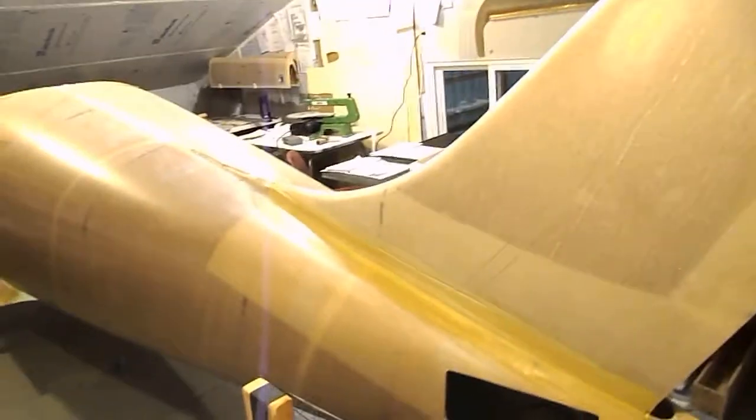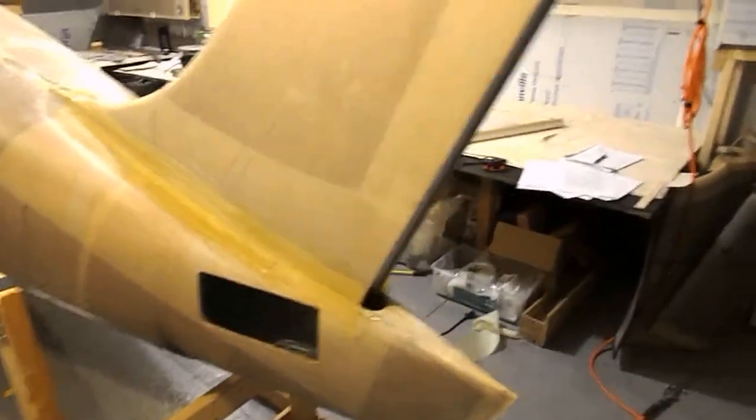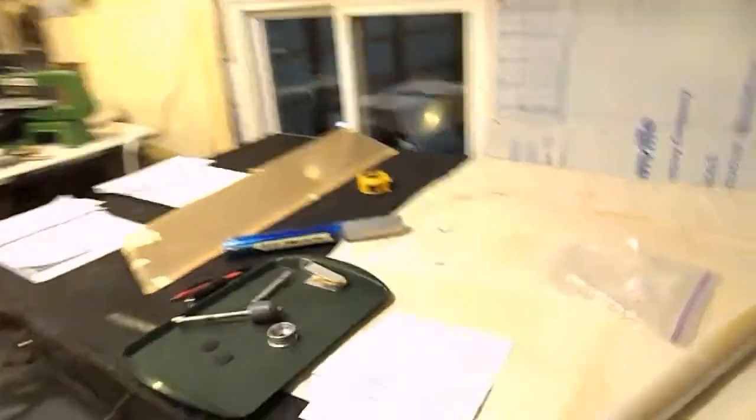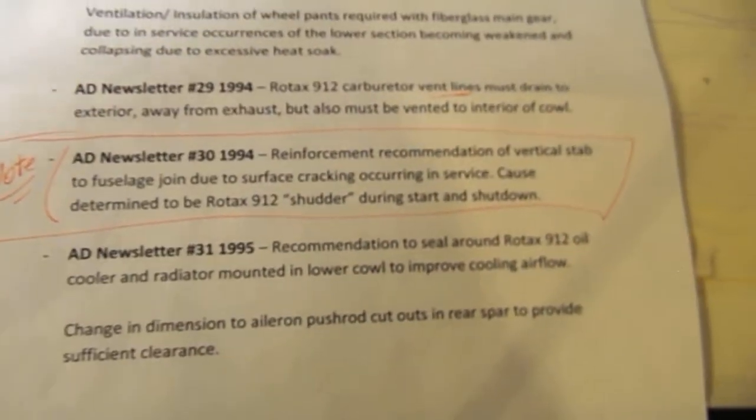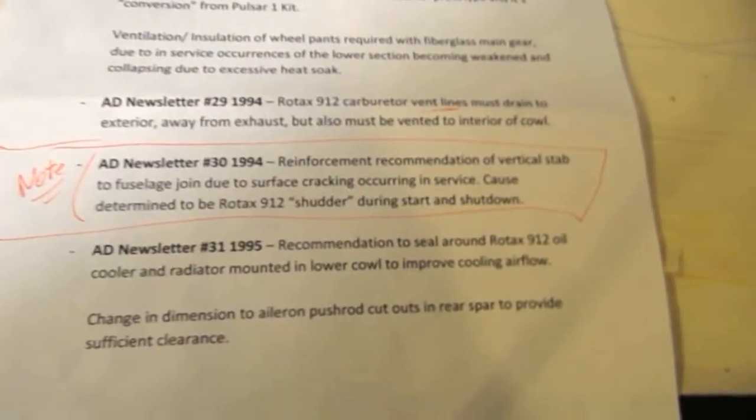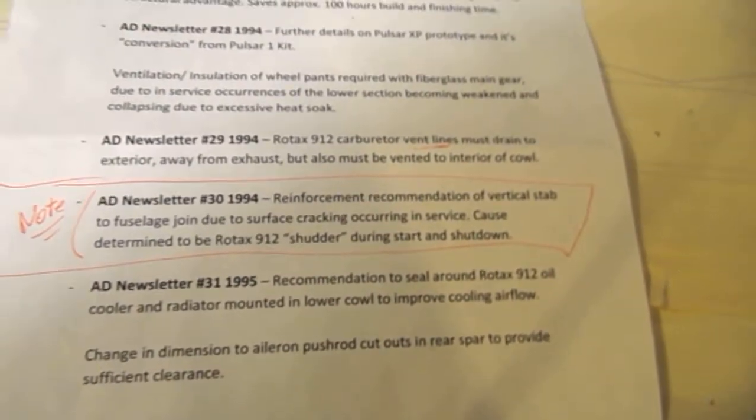Now, the glass is doubled up because there's been a service letter that came out quite a while back. I can show you a copy here. The way it reads is reinforcement recommendations of the vertical stabilizer to the fuselage due to surface cracking.